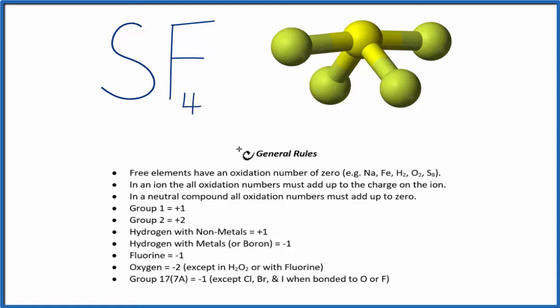We look down our list, we don't see sulfur, but we do see fluorine, that's a minus one. So we know that each one of these fluorines here has an oxidation number of minus one.